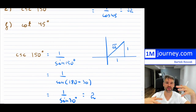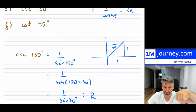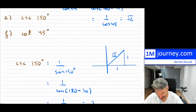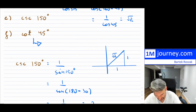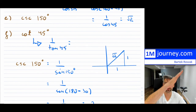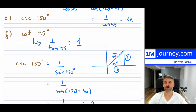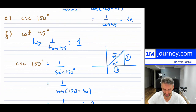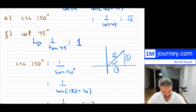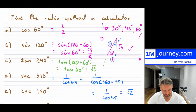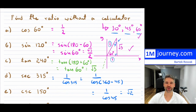The last one is cotangent of 45. Cotangent is 1 over tangent. 45 degrees is in the first quadrant, and tangent of 45 is 1/1 = 1, so cotangent of 45 is also 1. These are great examples — pause and try them on your own. They force you to remember the special angles of 30, 45, and 60. Thanks for watching, see you in a future video!